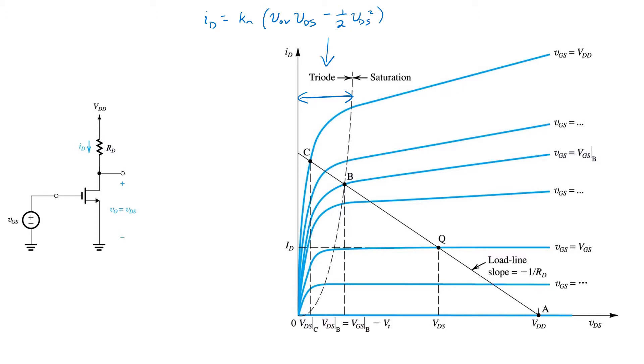That's when VDS is greater than VOV. And in that case, we've got our square law. There's the simple square law, but we see here these curves are suggesting that some channel length modulation is happening.